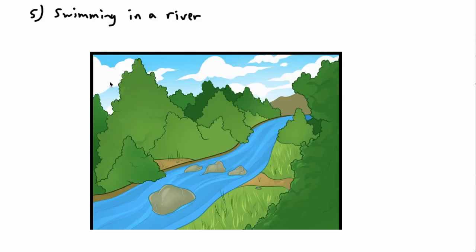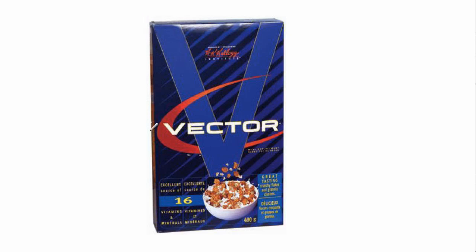Another example: imagine you're swimming across a river where the current flows to one side. You aim straight across, but the current pushes you downstream. Draw an arrow for the current, an arrow for your swimming direction, add them together, and you can figure out your actual path — a straight diagonal line showing where you'll end up. Vectors are hugely important. In fact, there's a cereal called Vector, and back in university I'd always eat it for good luck before vector exams!